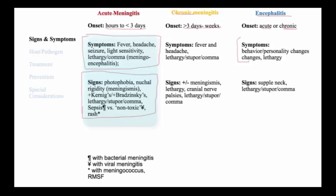There is Kernig's or Brudzinski's sign. Kernig's results in flexion of the knee leading to neck pain and flexion, while Brudzinski's sign is flexion of the neck leading to knee flexion that is involuntary.